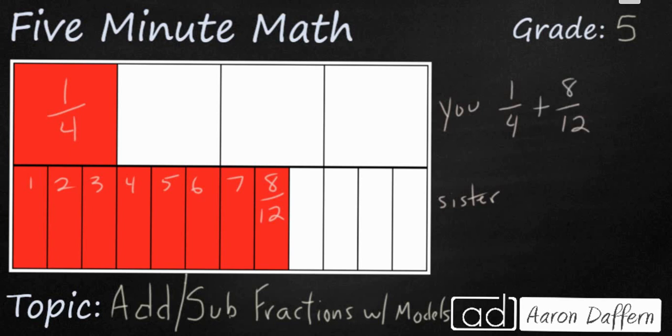Once again we do not have same denominators but we can use the picture to figure out whether we have enough money or not. You notice this one-fourth is equal to one, two, three-twelfths. You notice that it's the exact same.